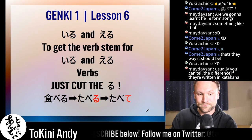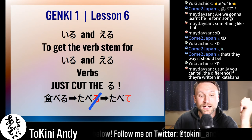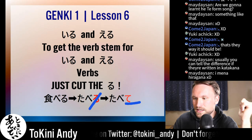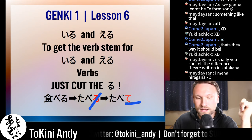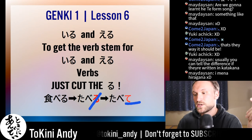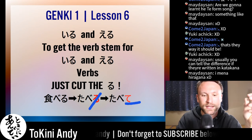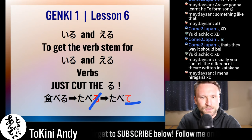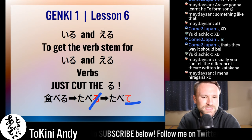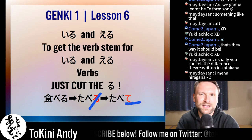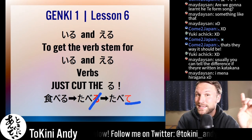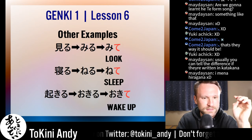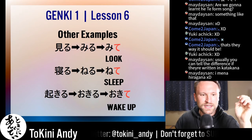So 'taberu' is an eru verb, which means super, super easy — all you have to do is cut the 'ru' and add 'te.' Taberu becomes 'tabete.' You can usually tell the difference if you know all the hiragana — you can tell which type of verb it is. If you don't know hiragana yet, you should learn it as fast as possible — definitely before going through this lesson.